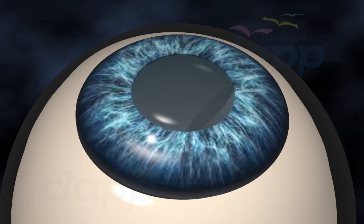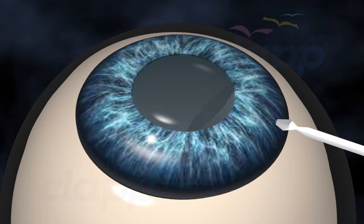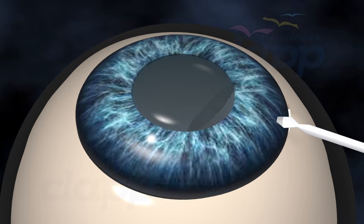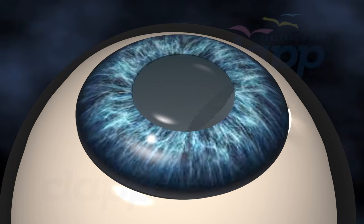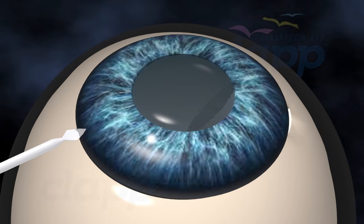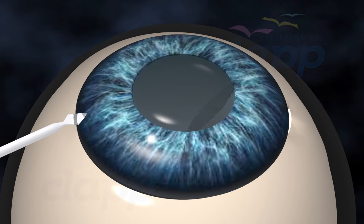Once you're ready, your surgeon will make a tiny incision, around 2 mm, in the junction between cornea and sclera. One or two tiny incisions will also be made to enable the manipulations during the surgery.